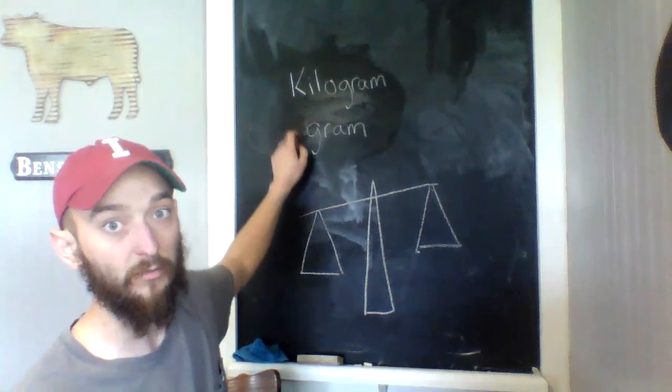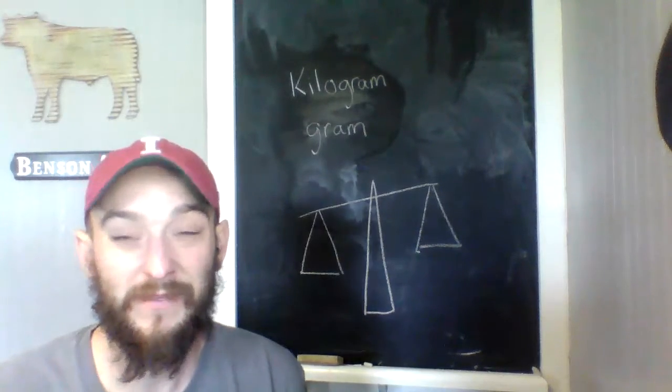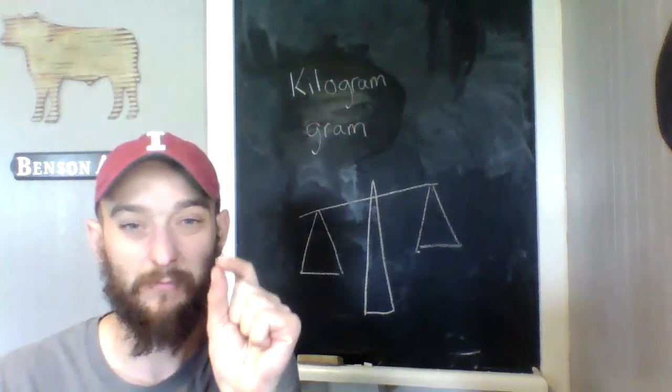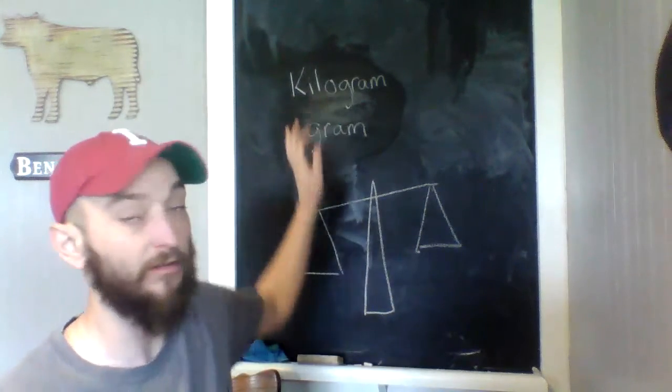Grams are the smaller unit. A gram would be something like a little rock, maybe something really tiny. Grams aren't very heavy at all. A kilogram is a lot closer to a pound.